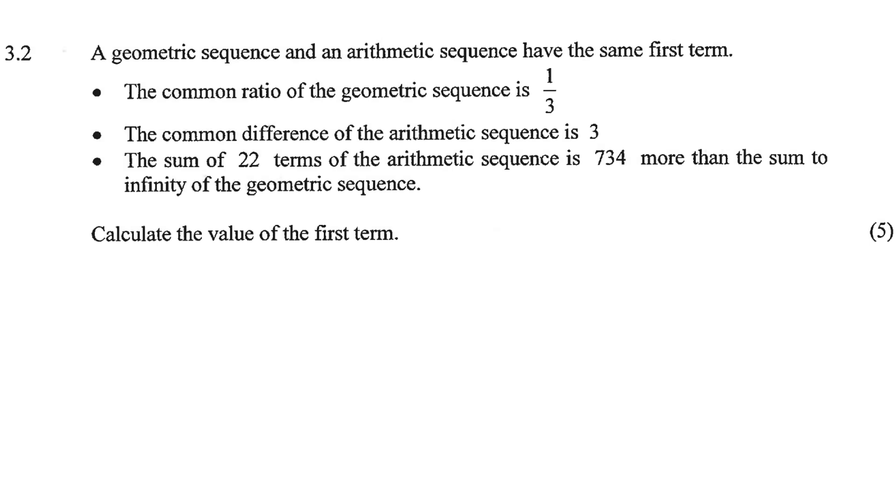A geometric sequence and an arithmetic sequence have the same first term. The common ratio of the geometric is a third. The common difference of the arithmetic is three. The sum of 22 terms of the arithmetic is 734 more than the sum to infinity of the geometric sequence.